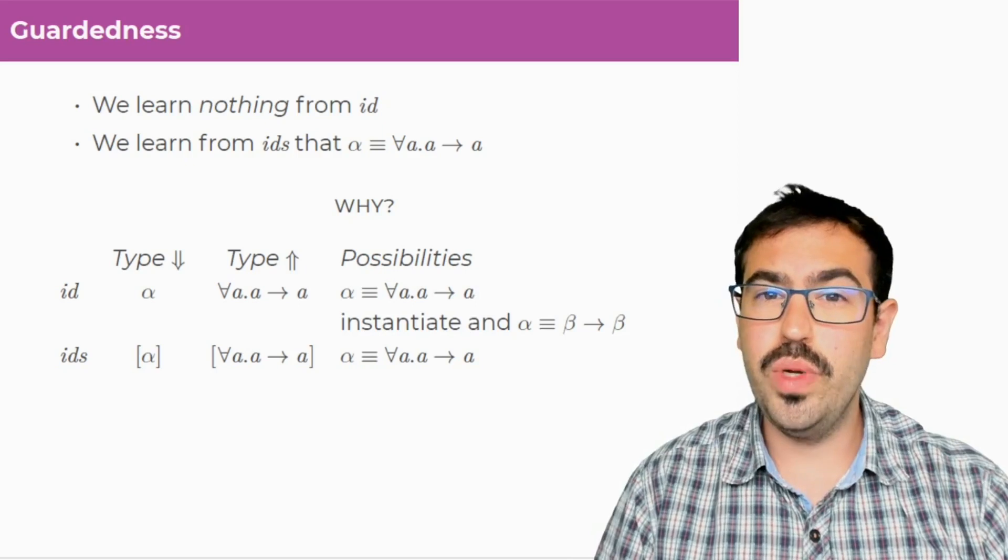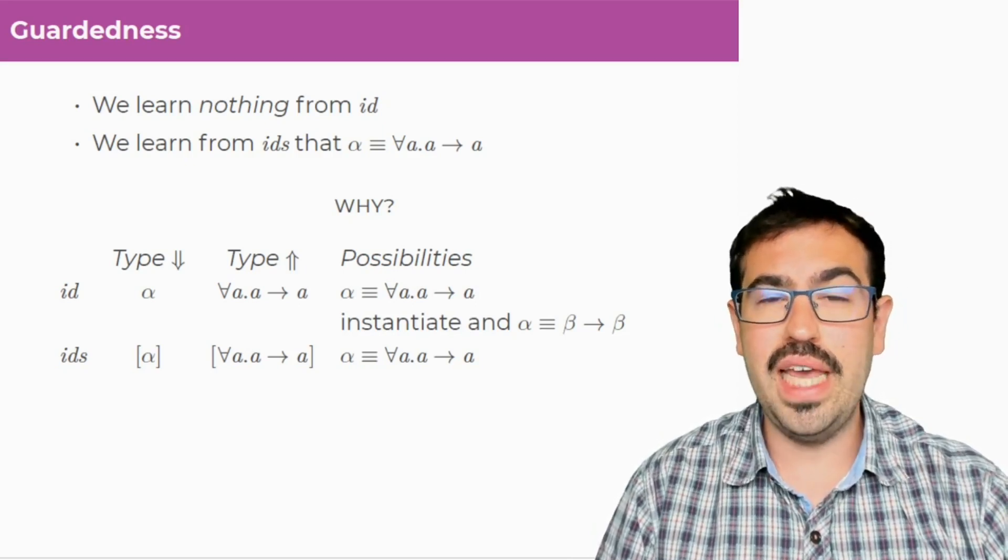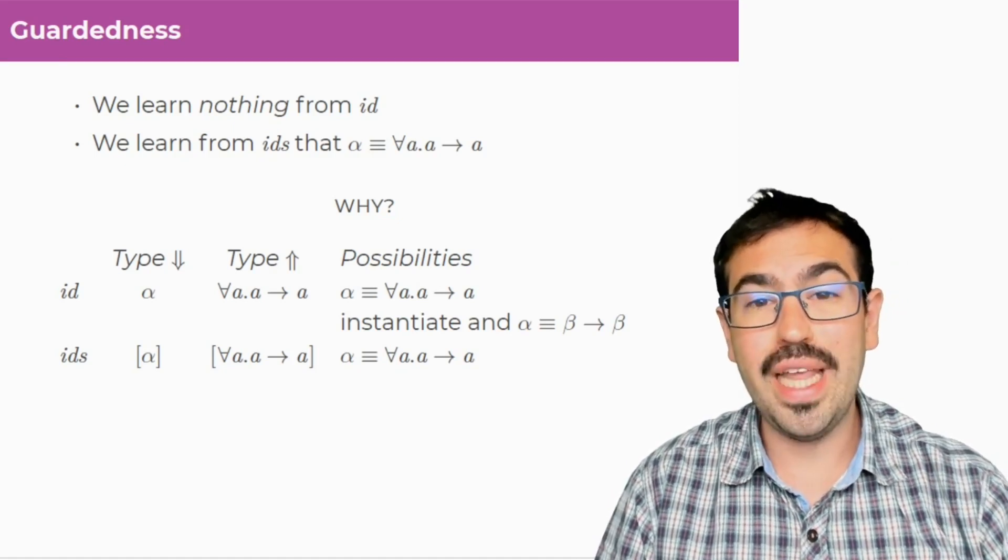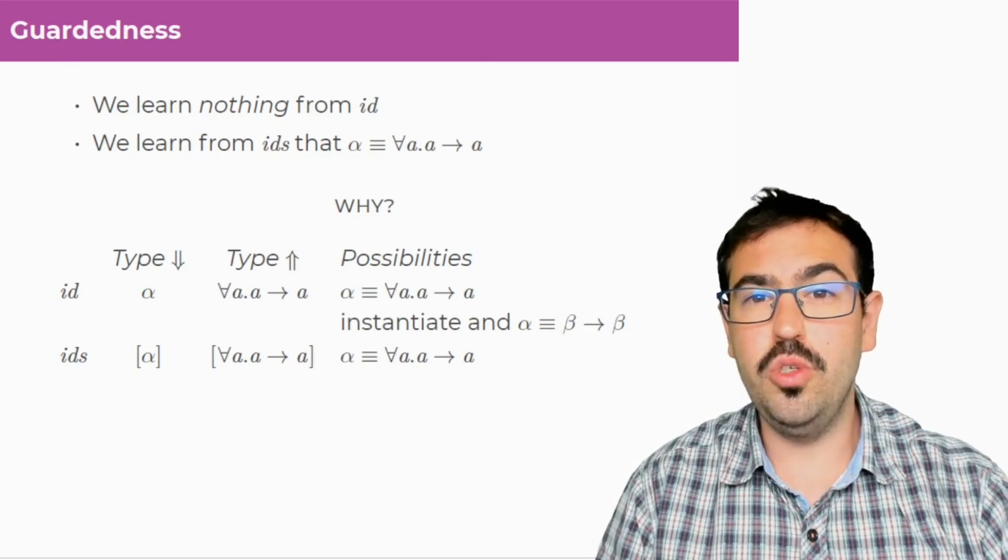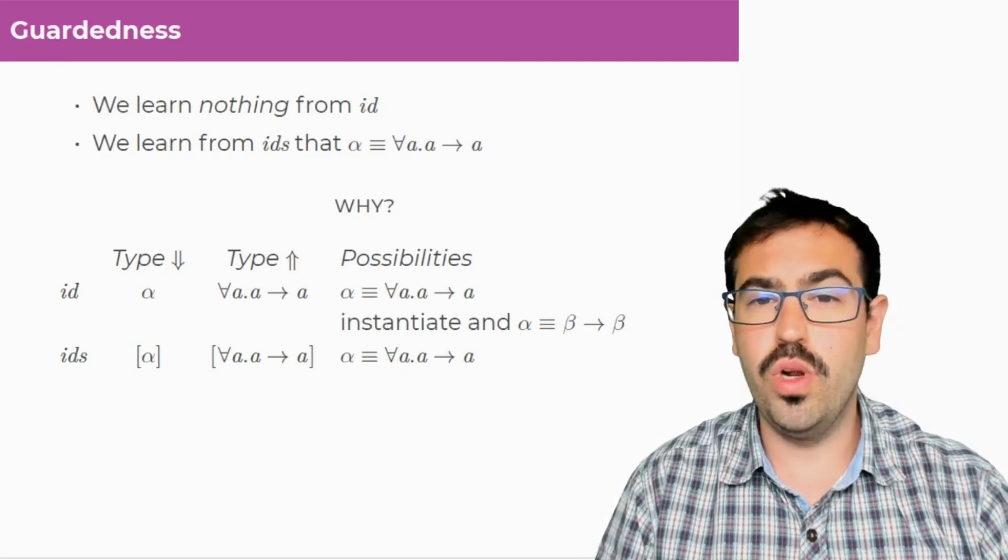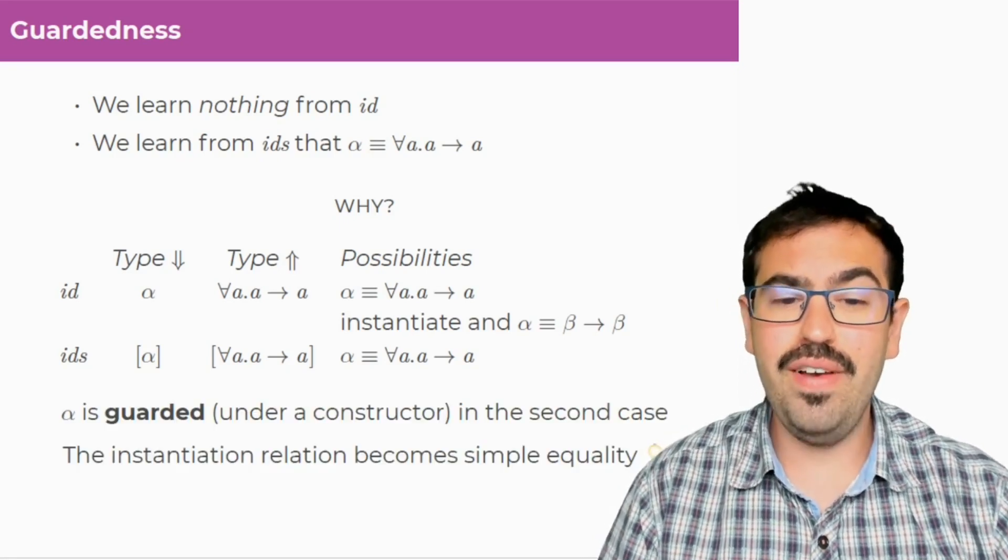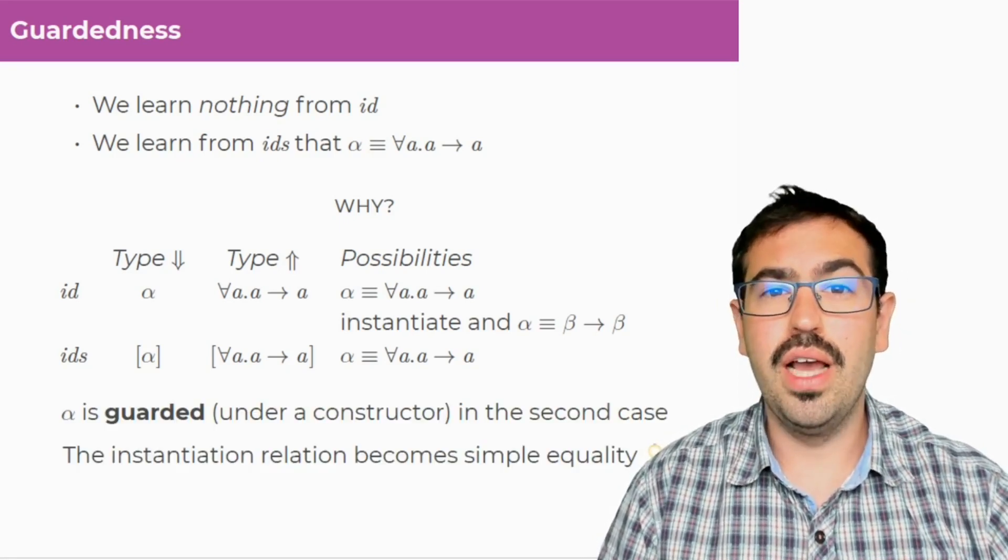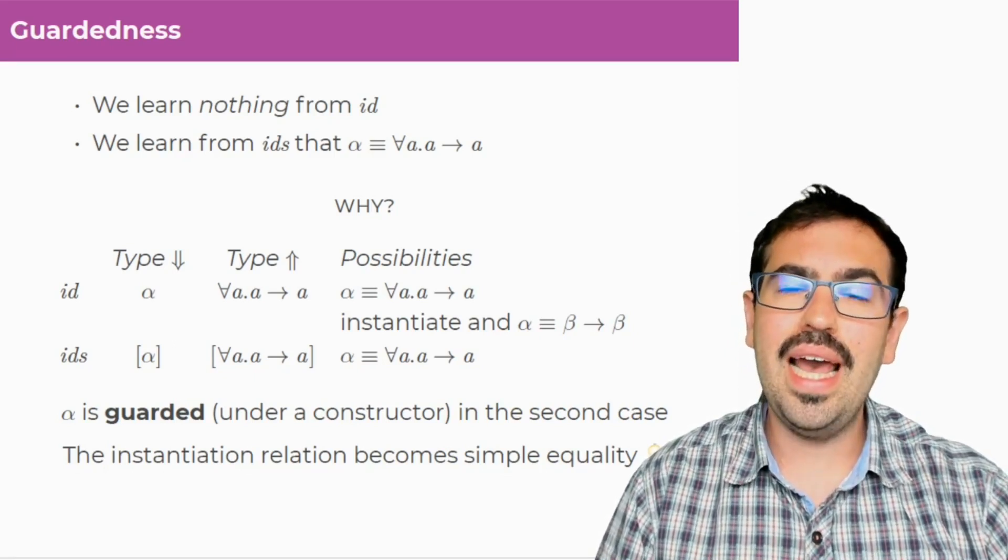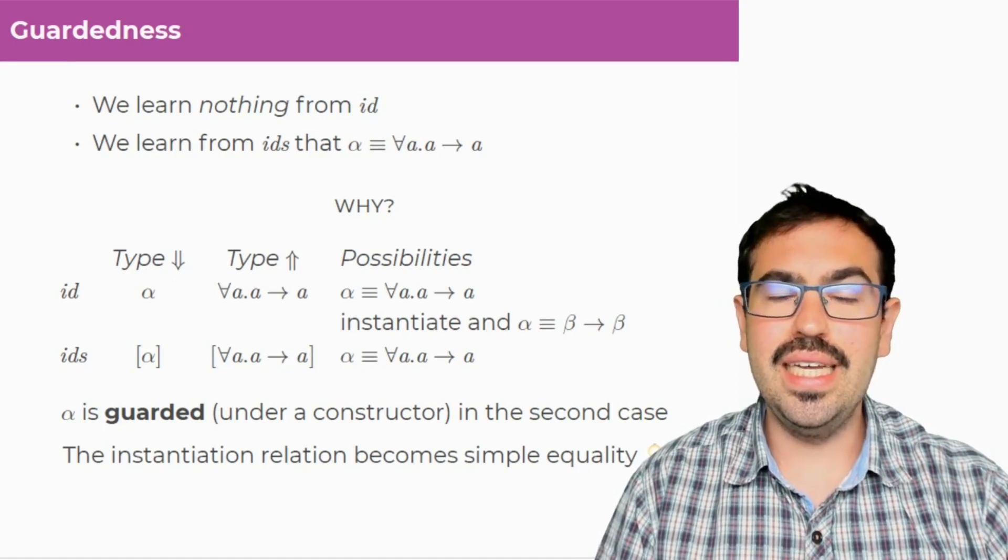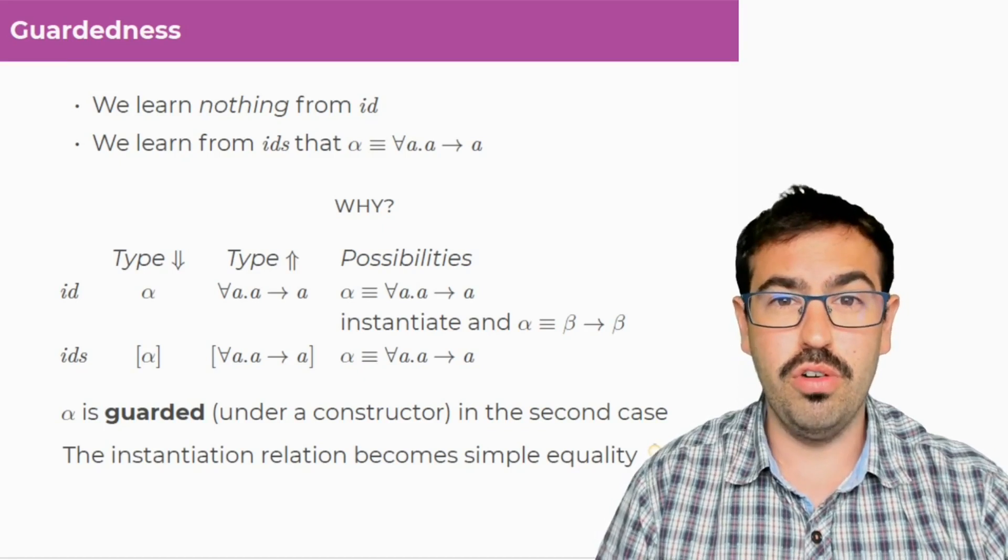Now, for the second case, we actually have two possibilities. It could be that alpha is for all A dot A to A, but we have another option. At this point, we could instantiate, so the for all A dot A becomes beta to beta, and then we make alpha equal to this beta to beta. The difference here is that alpha in the second case is what we call guarded, which means it appears under a type constructor.